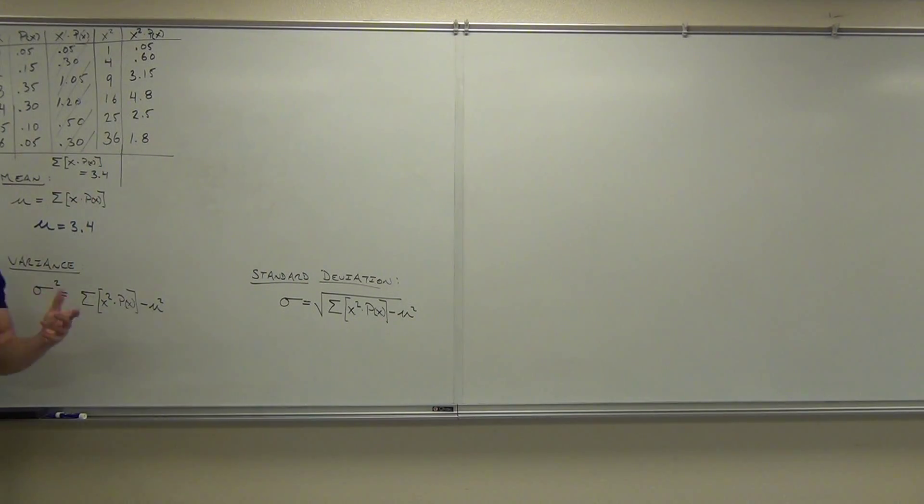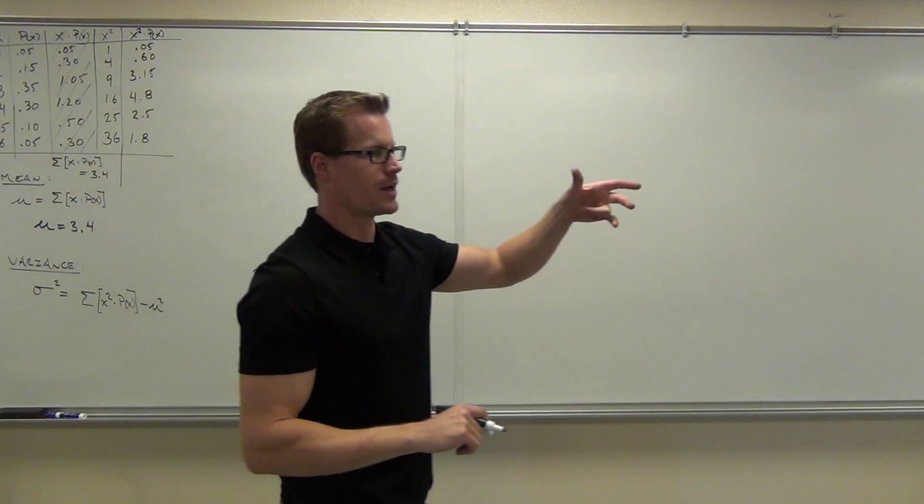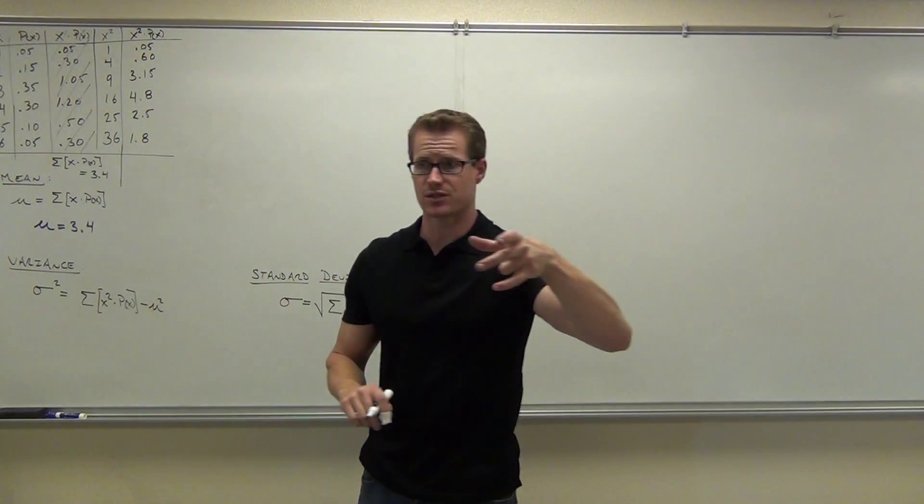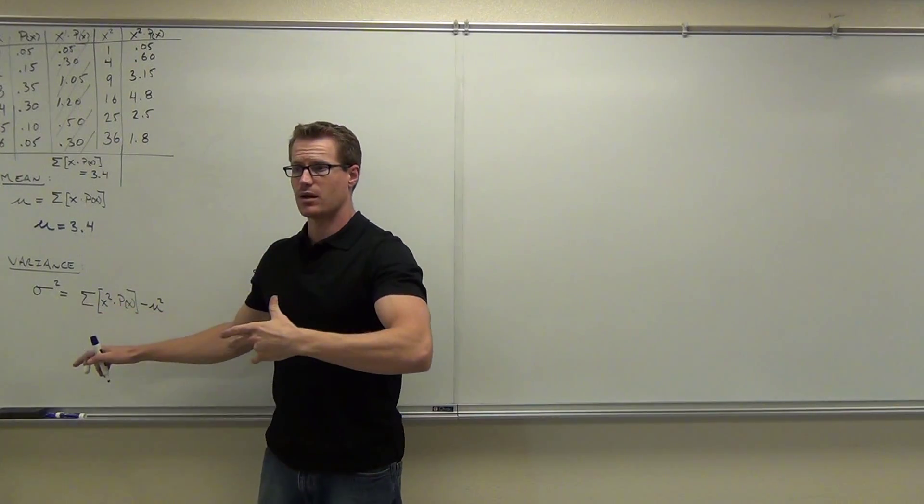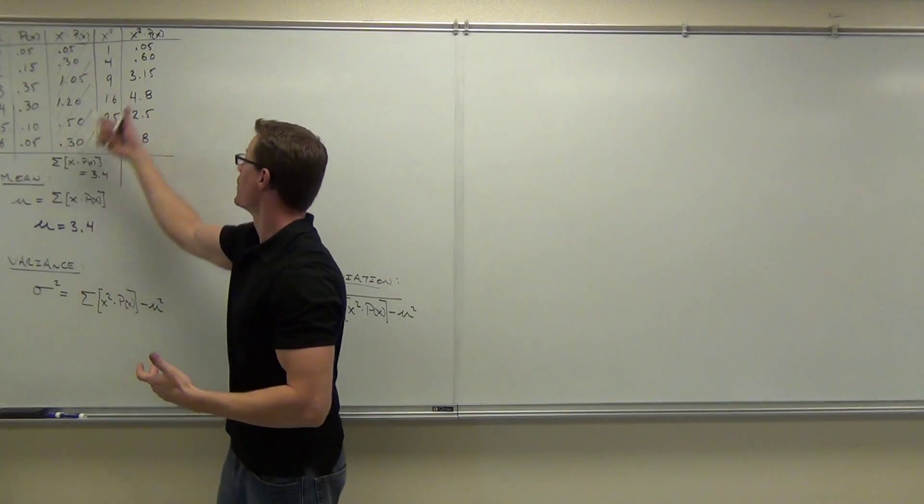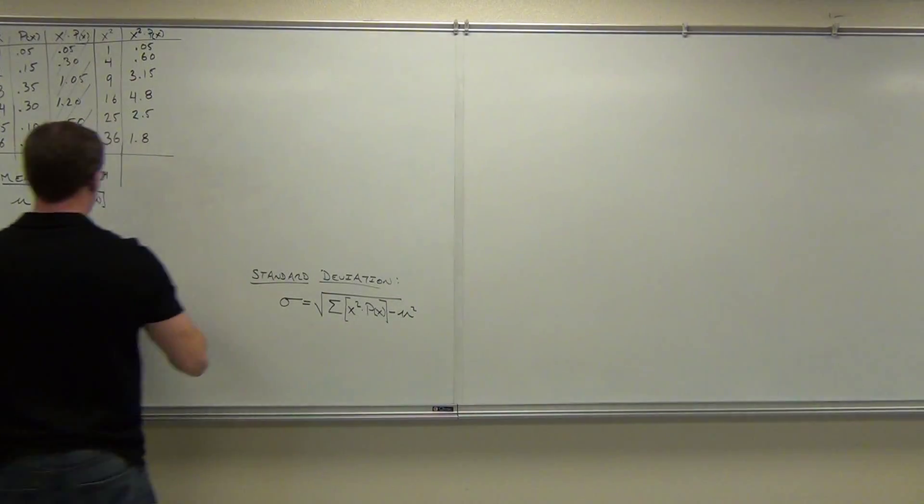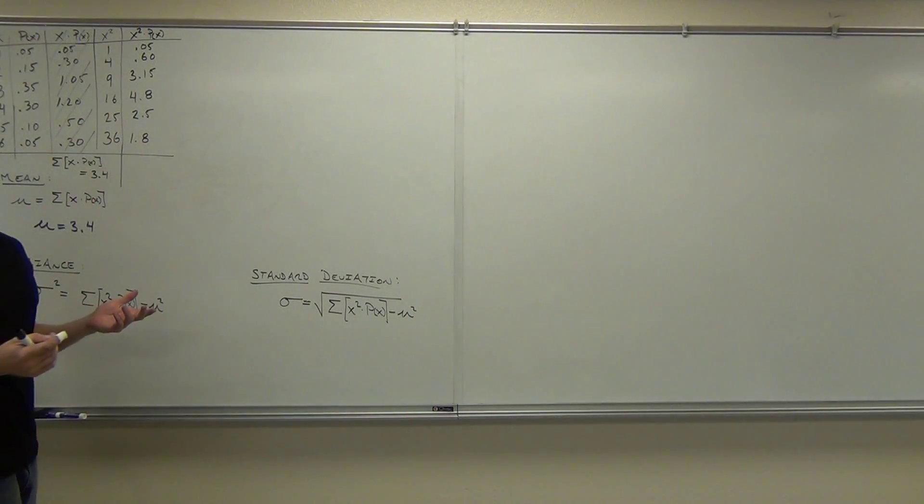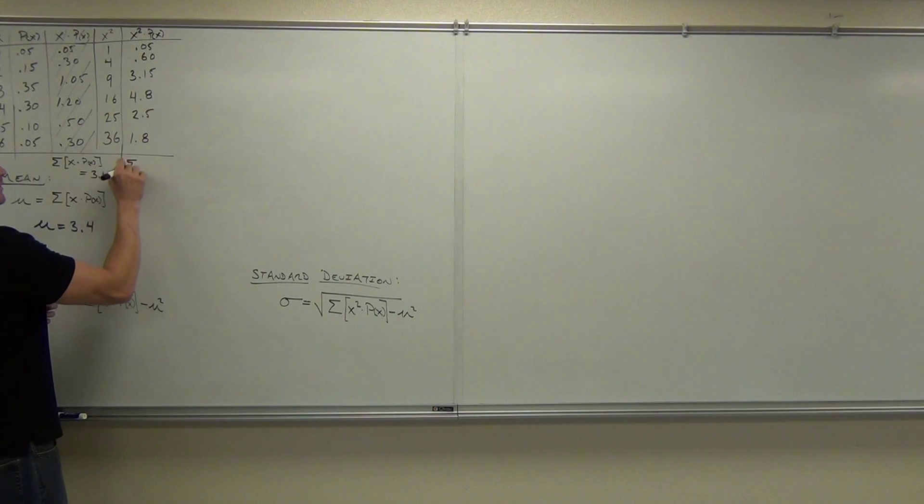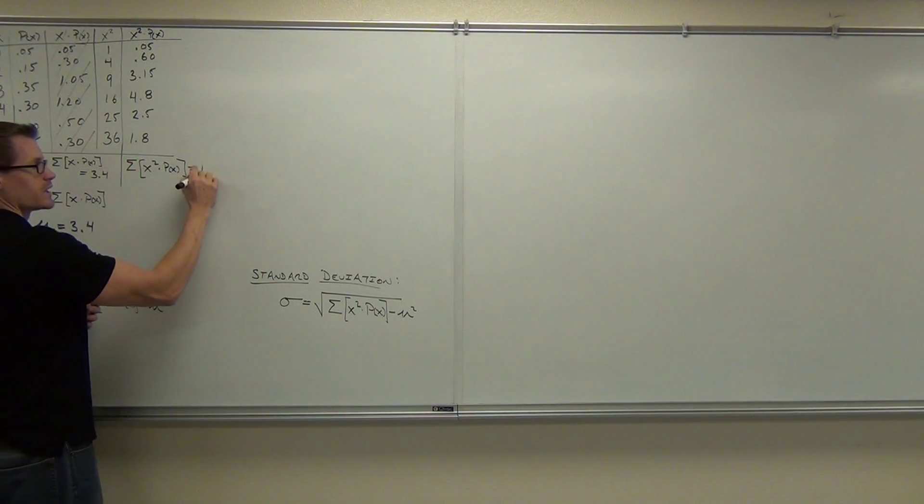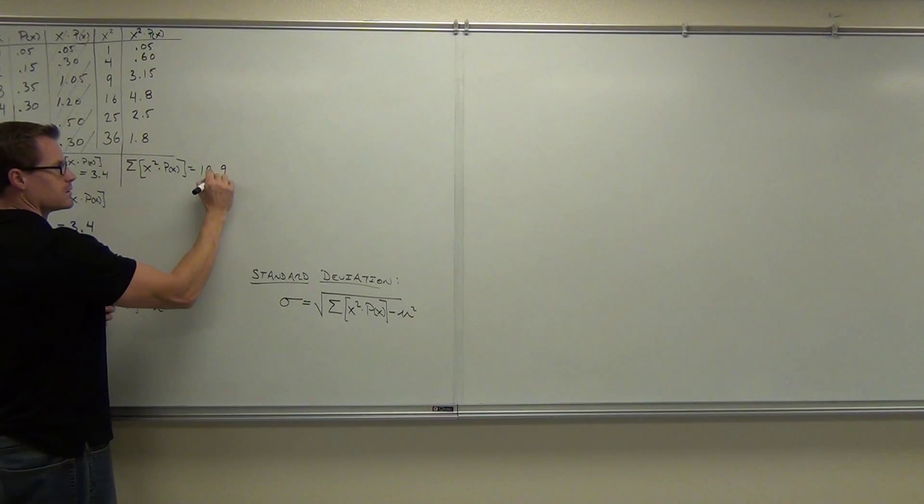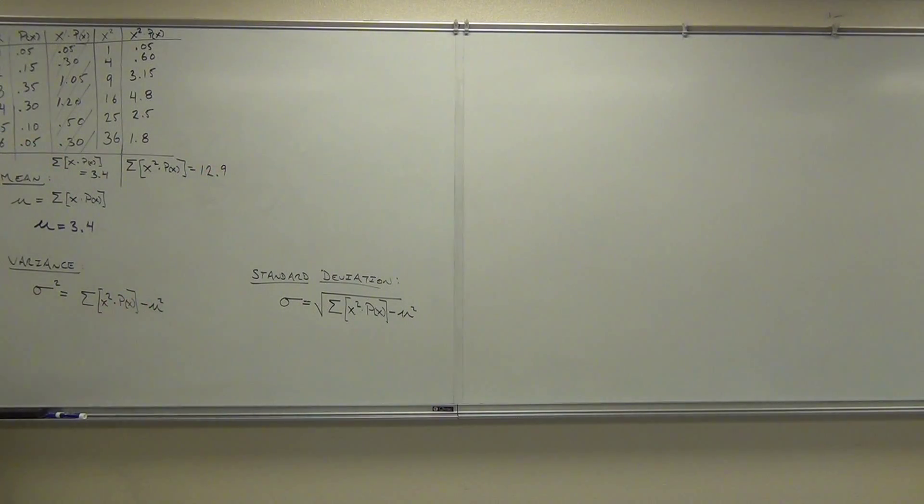What our formula says to do is take those x squares, multiply them by the probability for each of those x's respectively and then that summation says add up that column again. So just like we did with this column, we're going to add that up. So after we added those all up, what did we get out of that? The sum of x squared times p of x. You said 12.9? Cool, 12.9.